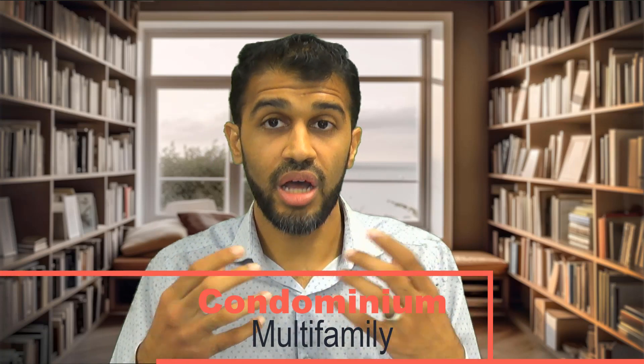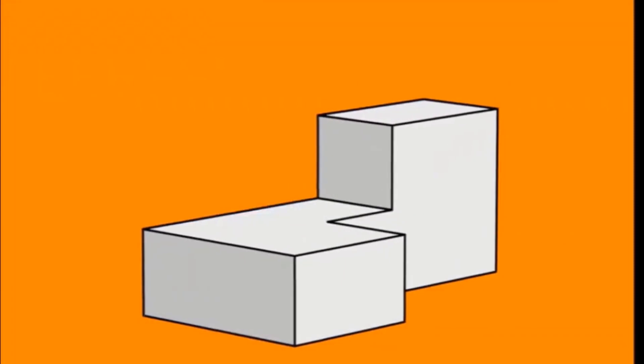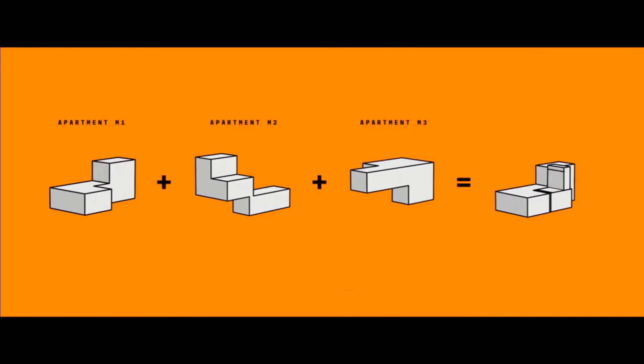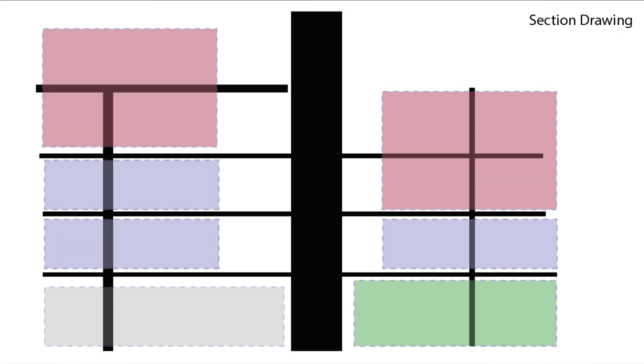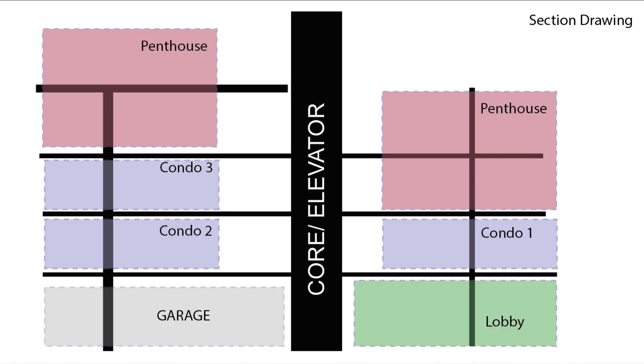The third option is a condo. Condominiums have a one-hour fire rating separation. You own the unit but no longer own the land — you own structure to structure, so in a concrete building, it's from concrete wall to concrete wall on the inside. You can't add windows, but you have full flexibility over lighting fixtures and interior finishes. The HOA significantly increases in a mid-rise or high-rise building due to higher maintenance costs like elevators. Security also increases drastically since you're no longer a standalone unit, and you're less flood-prone on upper floors.